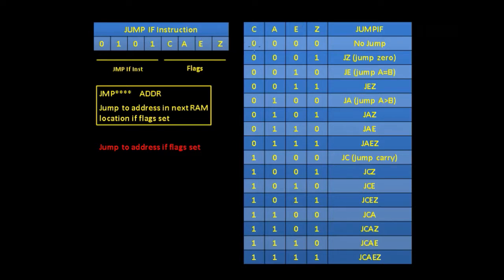We've got 16 possibilities here. The first one would be no jump. The second would jump if the zero flag was set. Another would jump if the equal flag was set, or jump if the equal flag or zero flag was set. Working all the way down, we'd have jump CAEZ — jumping if the carry flag, A greater than B, A equal to B, or zero is set. This jump command jumps to an address given by the contents of the next byte of RAM.